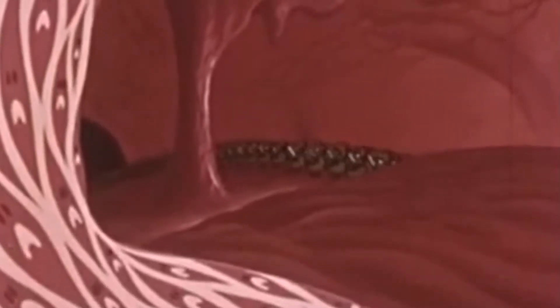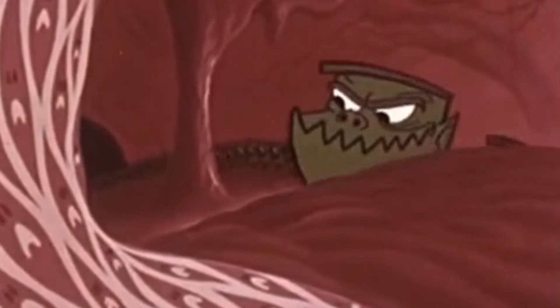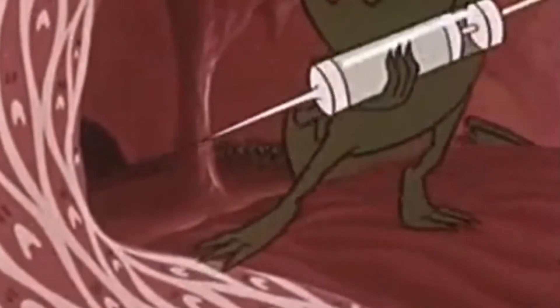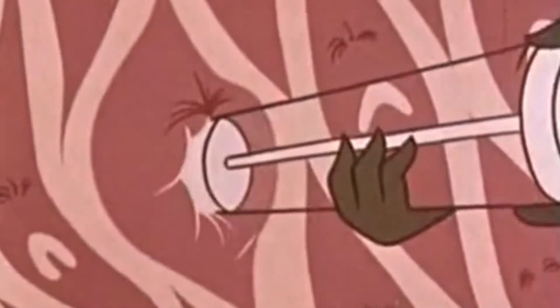From the bronchial tube, the carcinogens move into air tubes of the lungs where they begin to systematically antagonize the cells of the air tube.